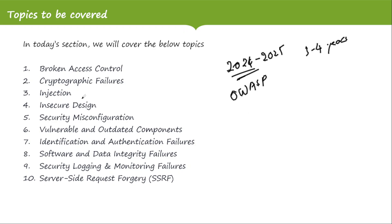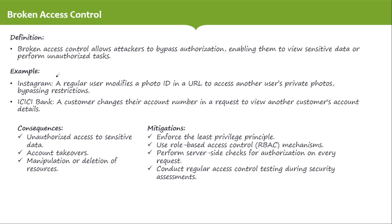We are going to cover all 10 vulnerabilities today. Let's start with the first one: Broken Access Control. Broken Access Control allows an attacker to bypass authorization, enabling them to view sensitive data or perform unauthorized tasks — whether they are an attacker or a normal user attempting to bypass authorization.